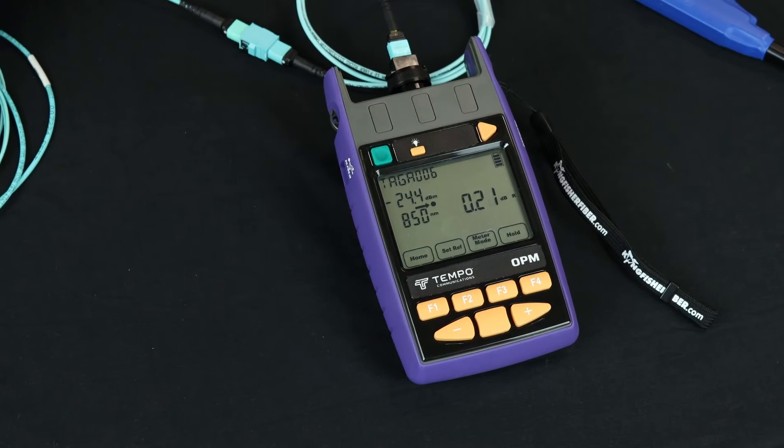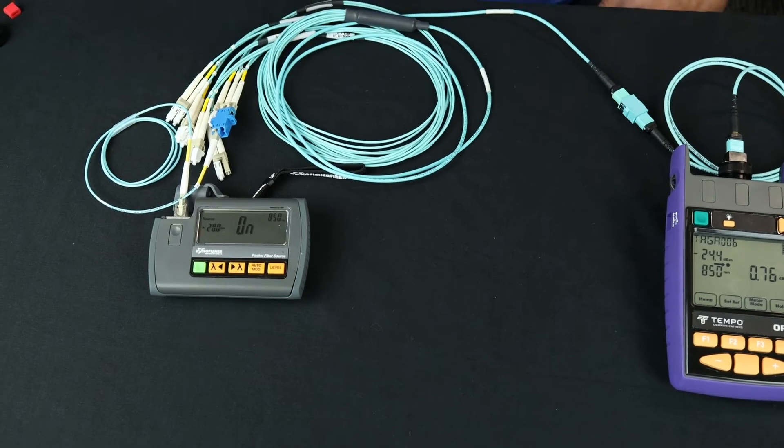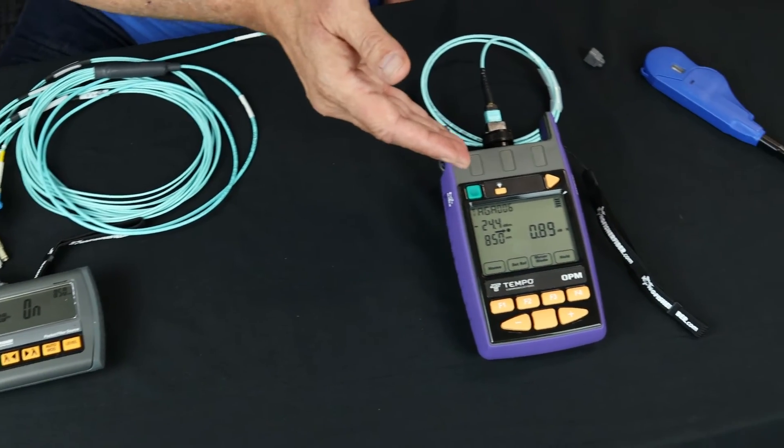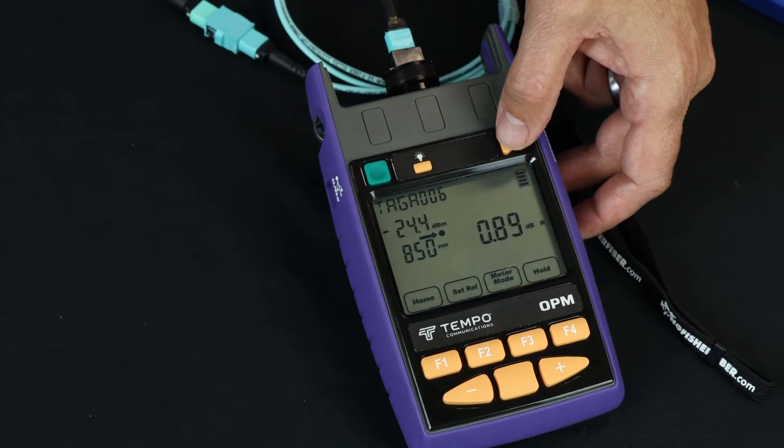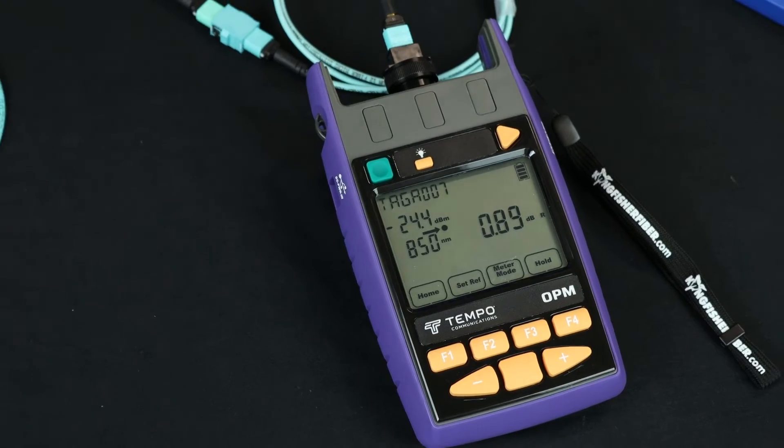And then move my launch lead down to the next fiber in the array. And you can see that on fiber number two, I've got 0.88 dB of loss. They're going to be different from lane to lane on the MPO and I can store that data as well.